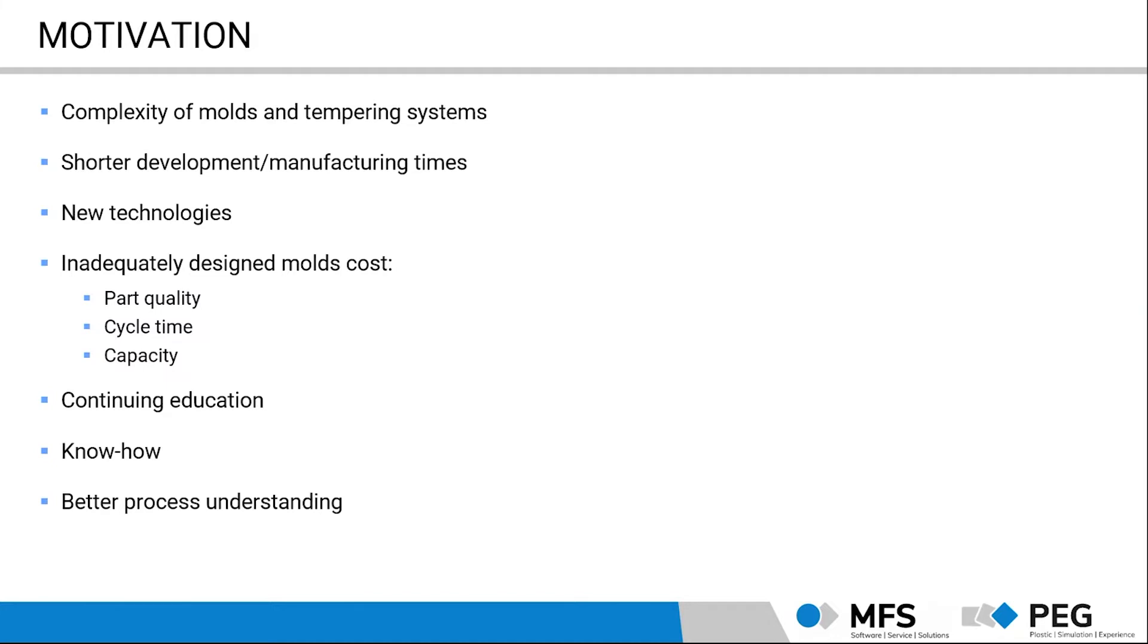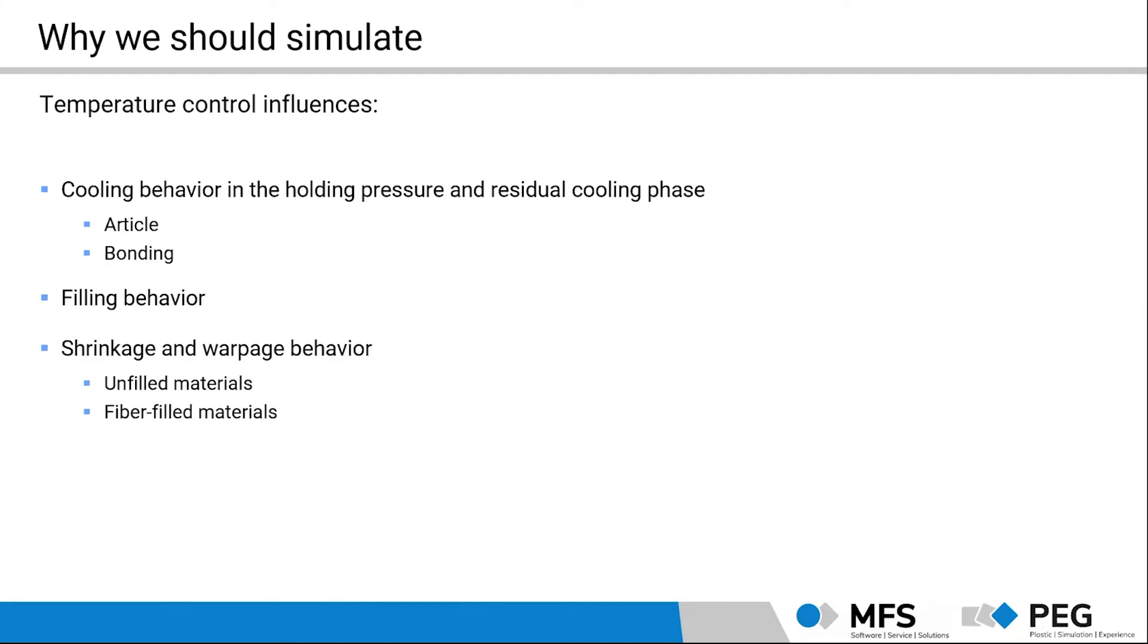Just a few slides about what temperature control influences. So the cooling behavior in the packing phase and the cooling phase affect our part quality and process times. But also the cooling system affects our filling behavior if we have huge differences in the mold surface temperature. And of course, the shrinkage and warpage behavior is also impacted by the cooling system, especially for the unfilled materials or less for the fiber-filled materials.